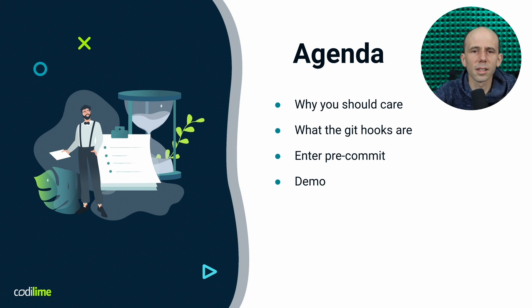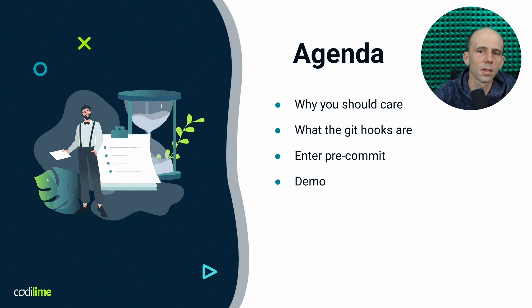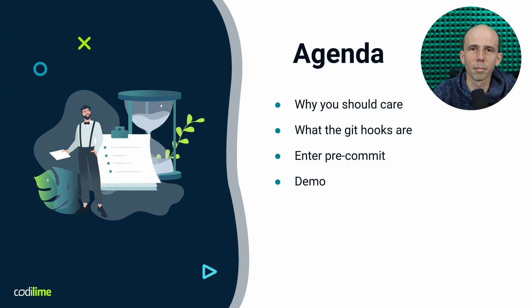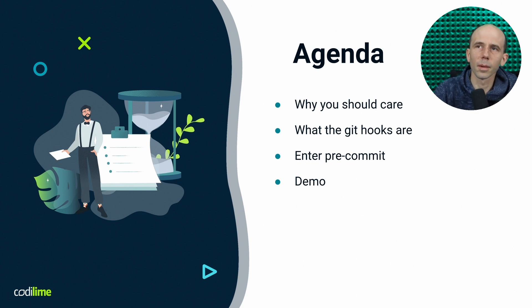By utilities I mean things like formatters, linters, static code analyzers — there is a really big list of those utilities that can be used with Git hooks. And finally we'll have a quick demo.